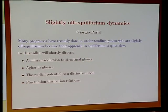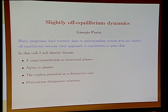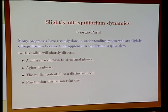What I would like to speak about today is to give some ideas, because this is quite a big subject, about what happens in equilibrium dynamics — systems which are nearly at equilibrium. It means systems which decay very slowly toward equilibrium and where the equilibration times are very large. I will present a mini introduction to structural glasses, discuss aging in glasses, discuss the replica potential as a tool, and also discuss fluctuation-dissipation relations and some generalizations.